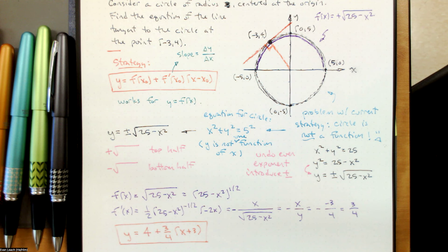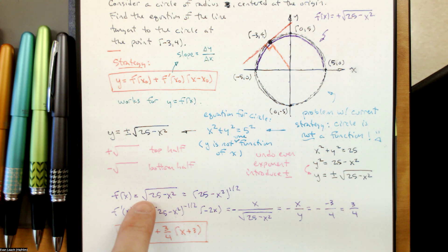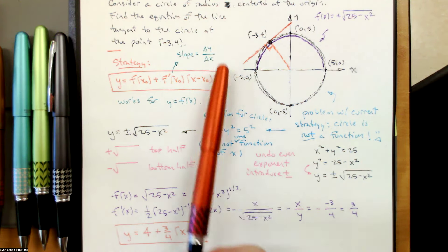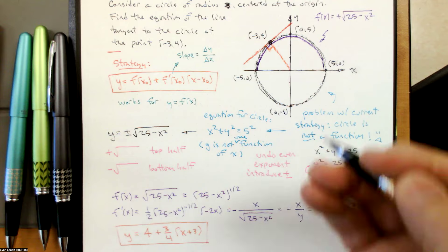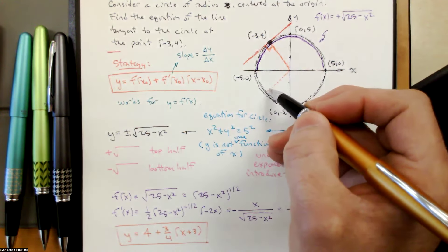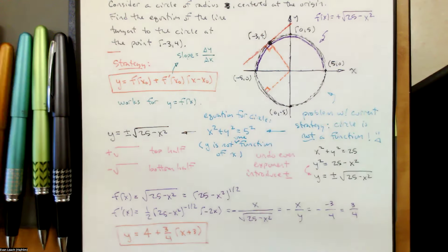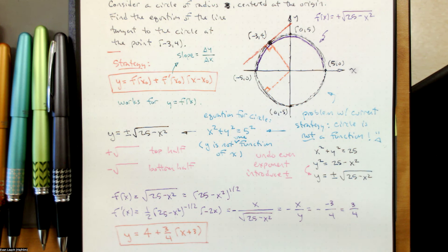If instead of the point at negative 3, 4, I put the point at negative 3, negative 4, and we wanted to do our calculus strategy, I would have had to choose f of x equals negative square root. If I multiply this function by negative 1, that just gets carried through and the derivative will just be negative 3 fourths. That makes sense — if I slide this point down to negative 3, negative 4, the slope should still be a 3 fourths magnitude but negative. Using the normal to the circle, the slope would be negative 4 over negative 3, and opposite reciprocals give us negative 3 fourths.